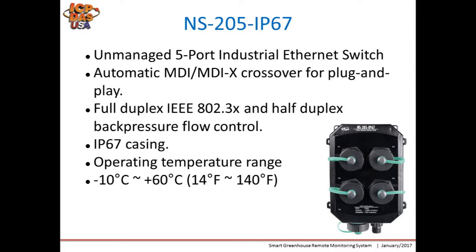Finally, we have IP67 Ethernet switches that can also be deployed in humid and extreme locations so the system has the ability to expand. The NS205 IP67 is an unmanaged five-port industrial Ethernet switch with automatic MDI/MDIX crossover for plug-and-play. It supports full-duplex IEEE 802.3 and half-duplex back-pressure flow control, and can operate from -10 to 60°C. It is fully IP67 rated, meaning it is dustproof and waterproof.